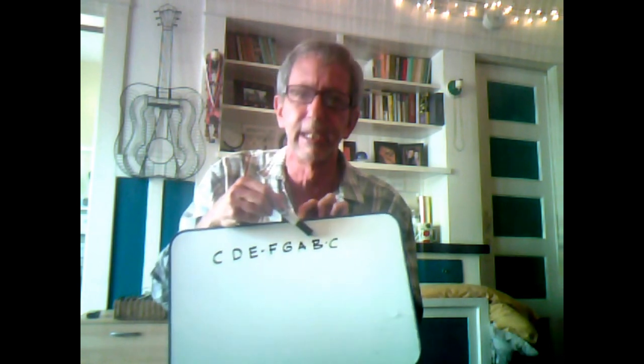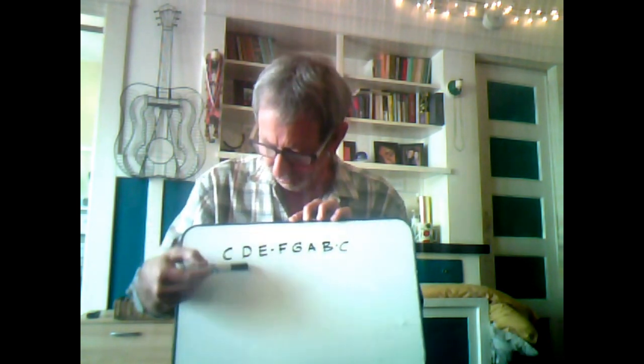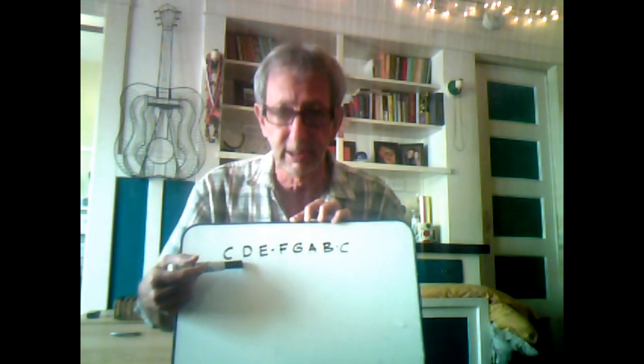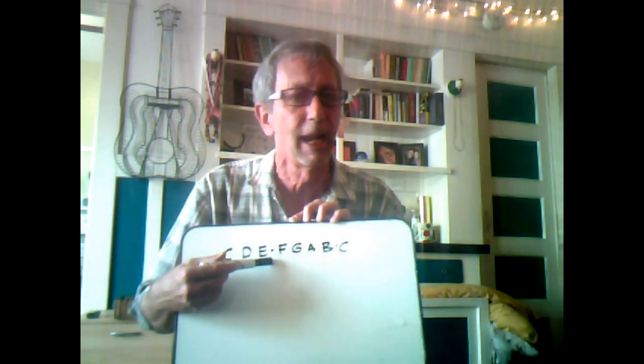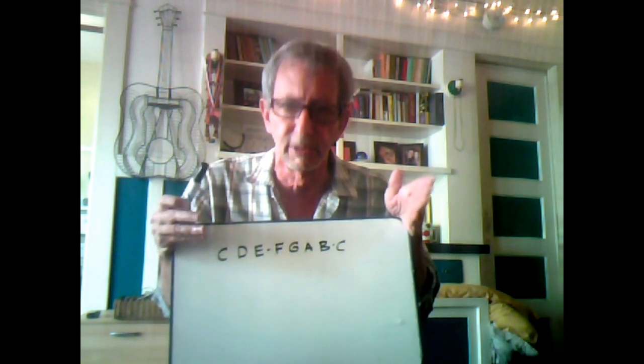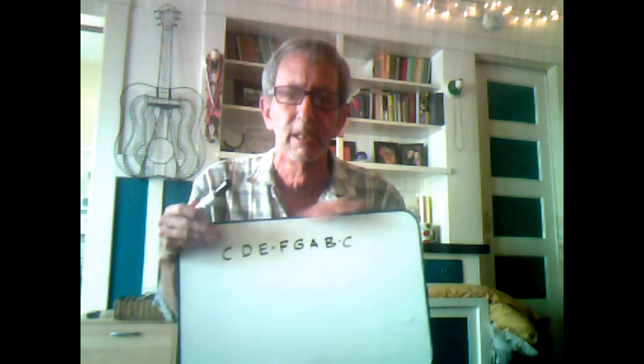A second is an adjacent set of notes: F to G is a second, D to E is a second, A to B is a second. But notice we categorize all of these as seconds, yet there are two different types. If you remember the whole step/half step formula — there's a whole step between C and D, a whole step between D and E, but only a half step between E and F. So we have to refine: is it a large second (whole step) or a small second (half step)?